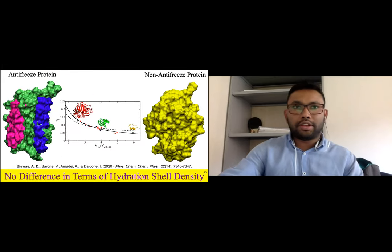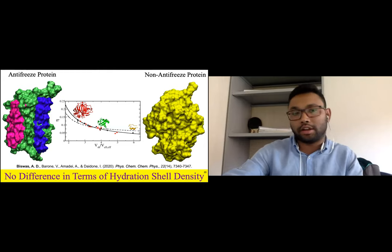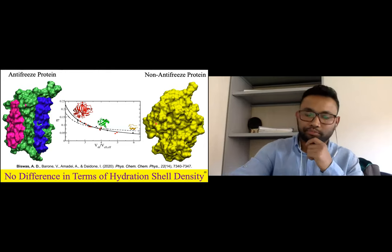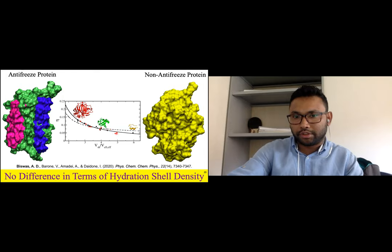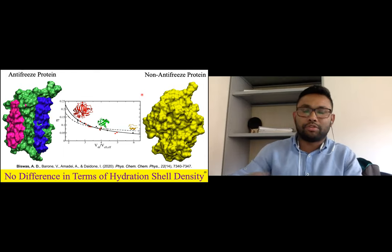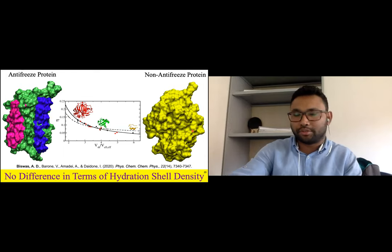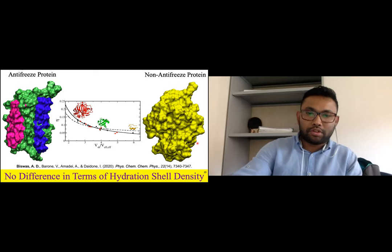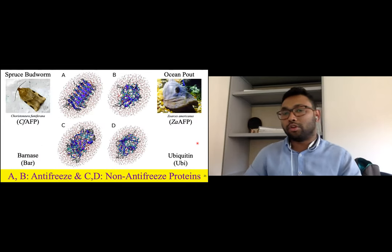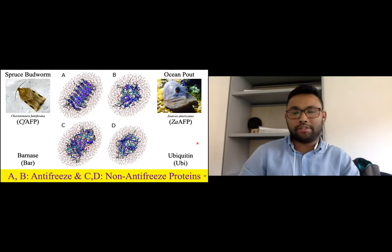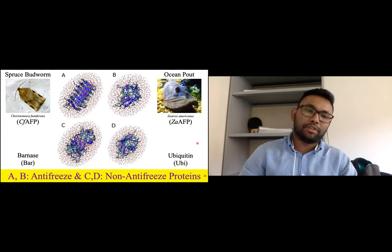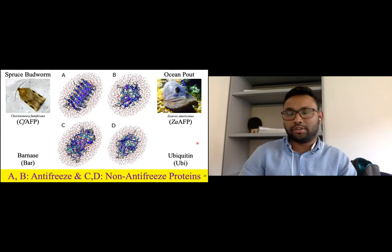Returning to antifreeze proteins — reported here in red — we did not find any difference between antifreeze and non-antifreeze proteins in terms of the relative density increment. So we wanted to go further and see what exactly makes antifreeze proteins different, and whether we can find any distinguishing result from the hydration shell of these special proteins. We took two different proteins — one from insect, one from fish — and two other proteins with very similar topological surfaces. We changed the water model from a three-point charge model to a four-point charge model and also changed the temperature, but we could not see much difference.